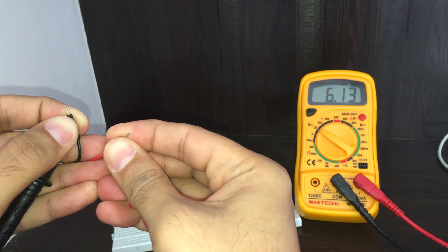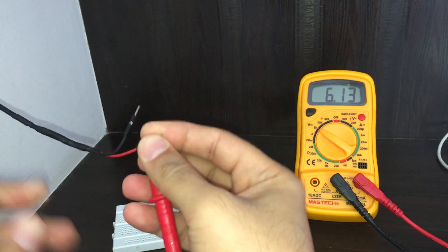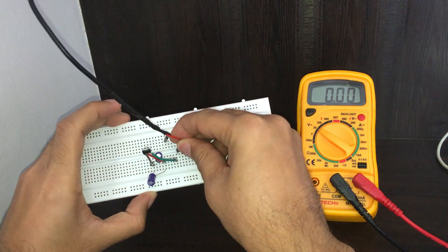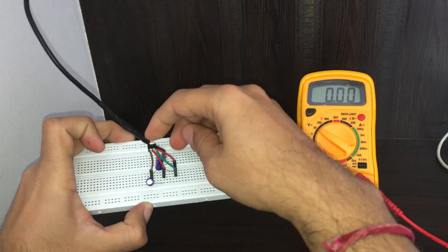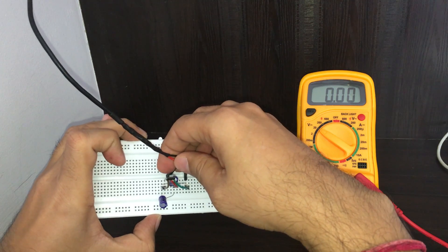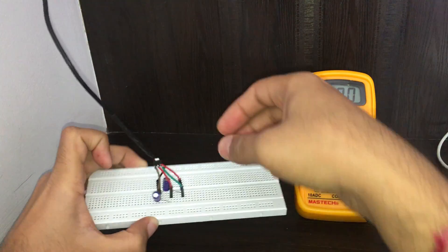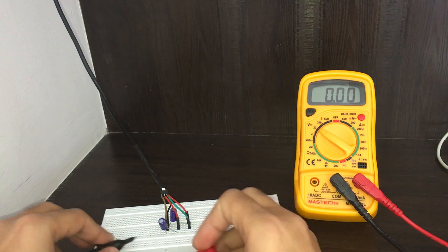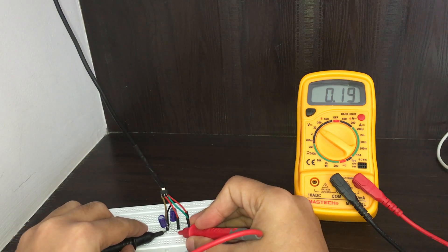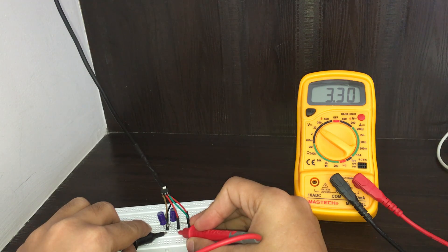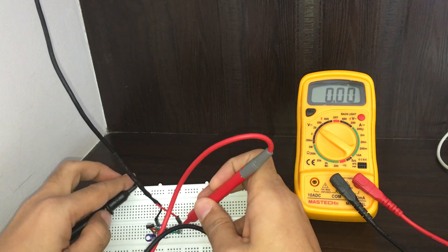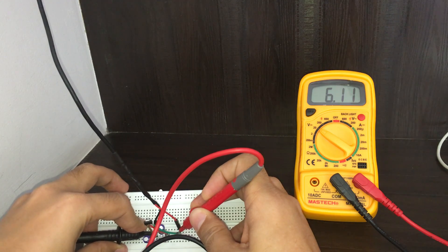6.13, okay. So I'm going to connect it with the module here. Our power supply is ready, let's check the output. Here you can see we have got 3.3 volt output, and if we check at the input side...